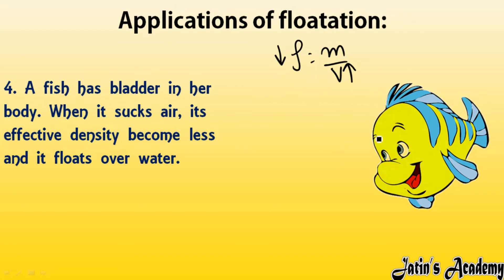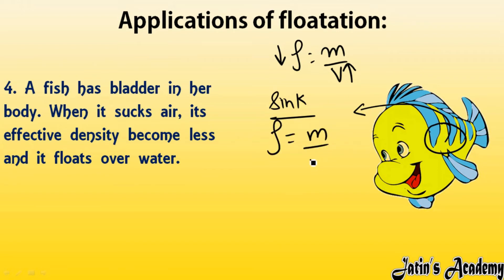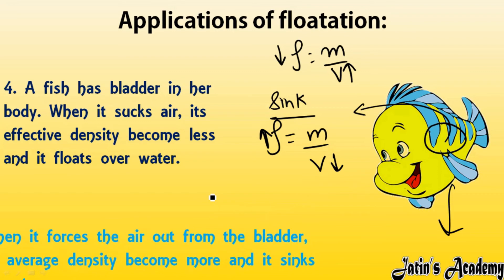On the other side, why does a fish sink in seawater? Whenever the fish pushes the air out of its bladder into the water, the volume of the bladder reduces. Since density equals mass by volume, if volume reduces, density increases. So whenever density increases, the fish can easily sink in seawater. It all depends on the bladder — fill it with air and volume increases, density decreases; empty it and volume decreases, density increases. This is how a fish can float or sink in water.